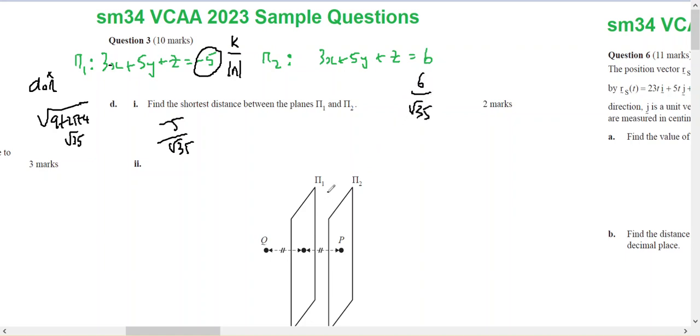Therefore the origin must be in the middle, and plane 2 to the origin is 6 on root 35, and plane 1 to the origin is 5 on root 35. Therefore the two planes must be 11 on root 35 apart.